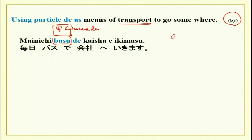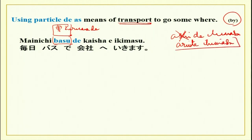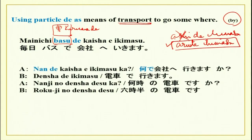But watashi wa ashi de ikimasu is not used. Instead, you say aruite ikimasu — walking to go somewhere.